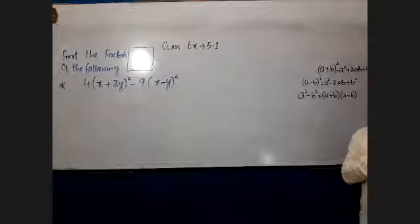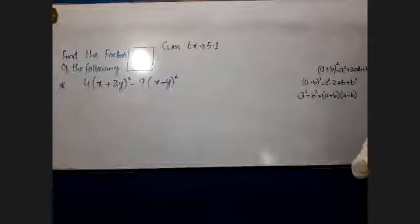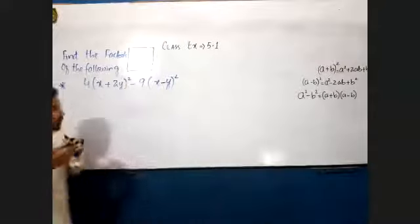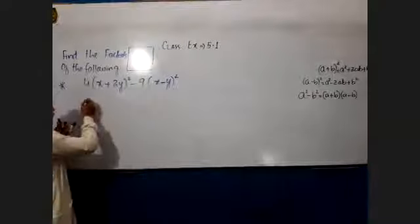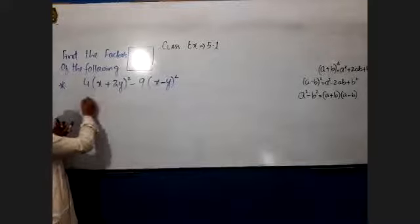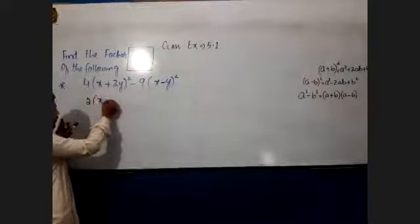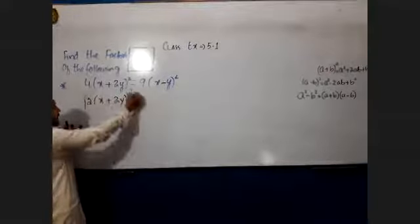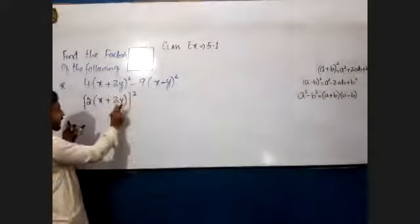4 is 2 squared and 9 is 3 squared. What will we do? The first thing is that we will take out the square so that this whole value becomes a perfect square.